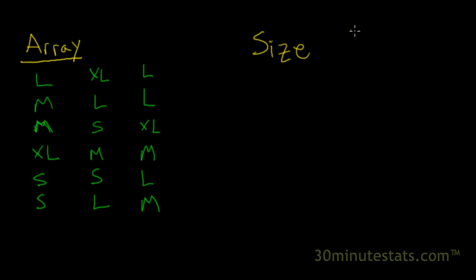So we'll call this frequency distribution a size and the second column will be the frequencies. And so let's say we've got sizes of small, medium, large, and extra large.